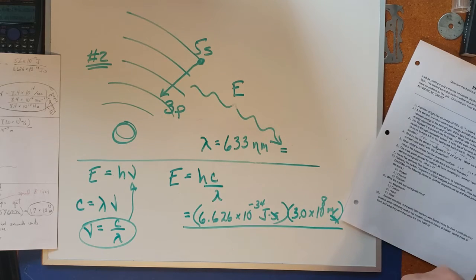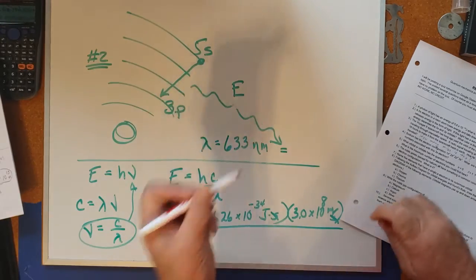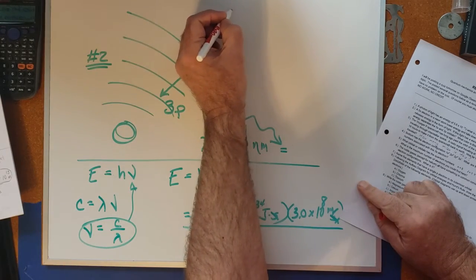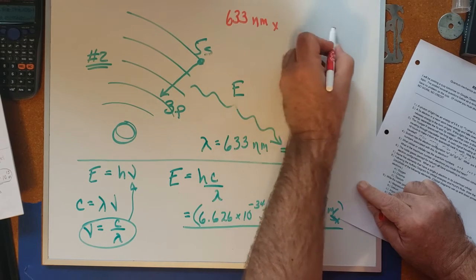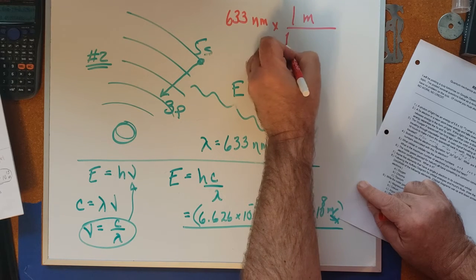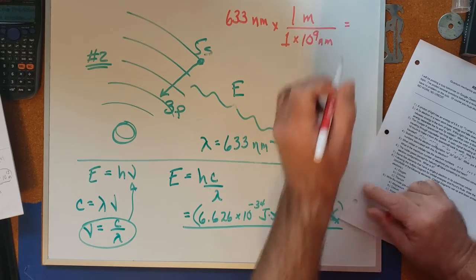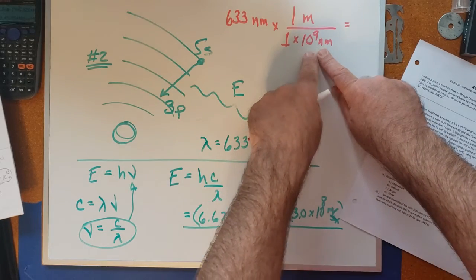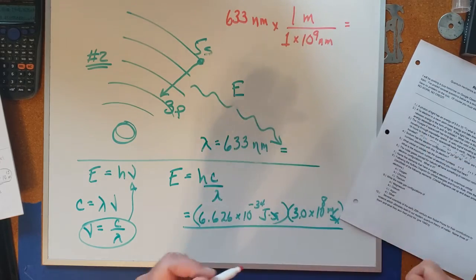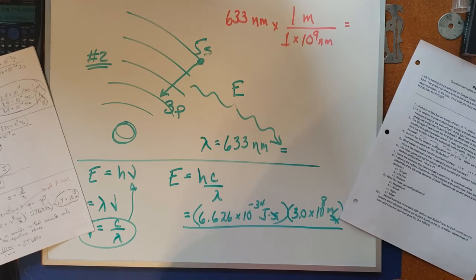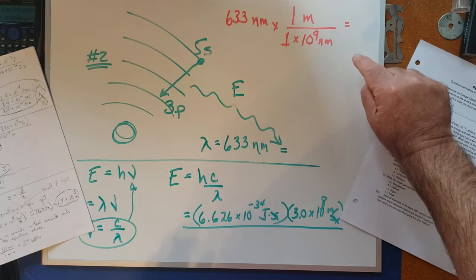So I'll get out my red color pen here, and we'll say 633 nanometers, and each one meter contains one times 10 to the ninth nanometers. Nano means one one billionth. One times 10 to the nine is a billion, so a billion billionths of a meter is one meter. And when you do that, you will get an answer of 6.33 times 10 to the minus seven meters.